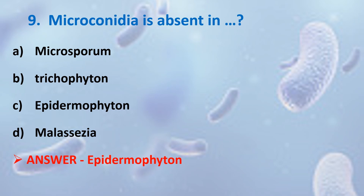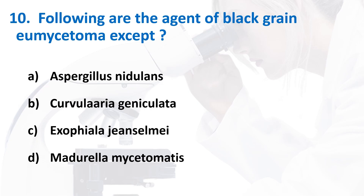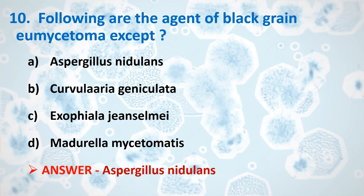Tenth question: Following are agents of black grain eumycetoma, except? Options: Aspergillus nidulans, Curvularia geniculata, Exophiala jeanselmei, Madurella mycetomatis. Answer is Option A, Aspergillus nidulans, because it is a white grain eumycetoma causative agent. The others — Curvularia geniculata, Exophiala jeanselmei, and Madurella mycetomatis — are black grain eumycetoma causative agents.